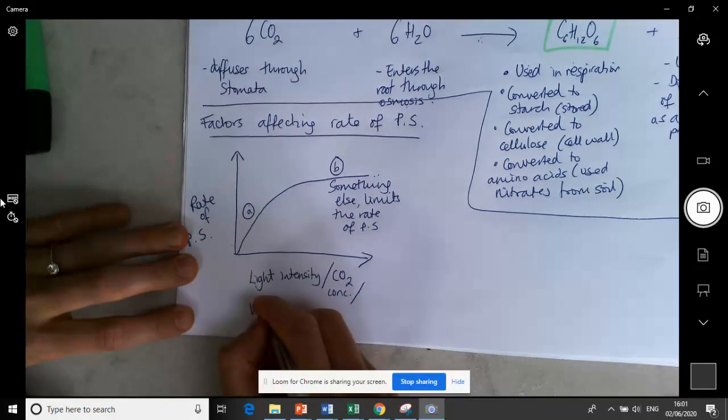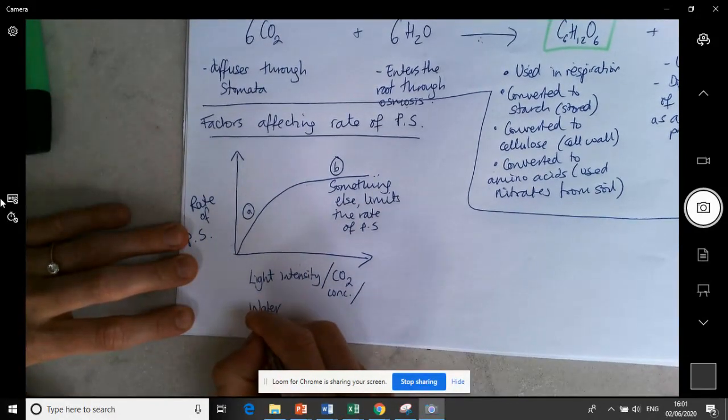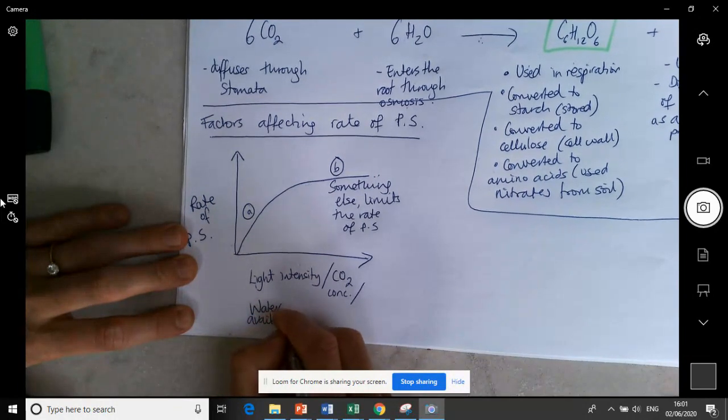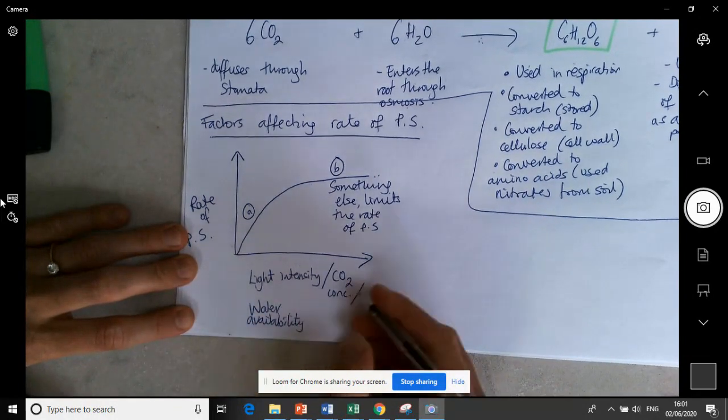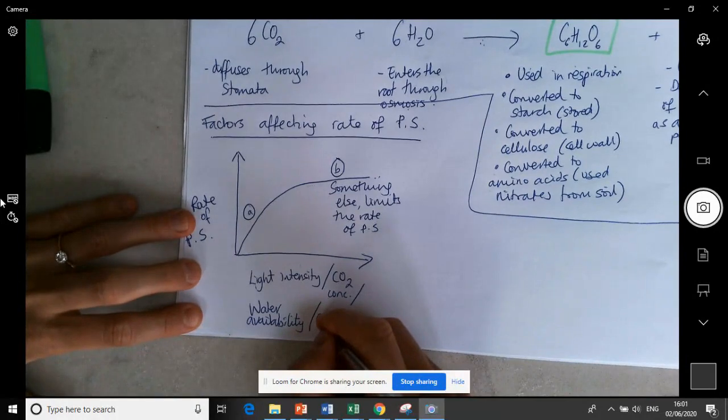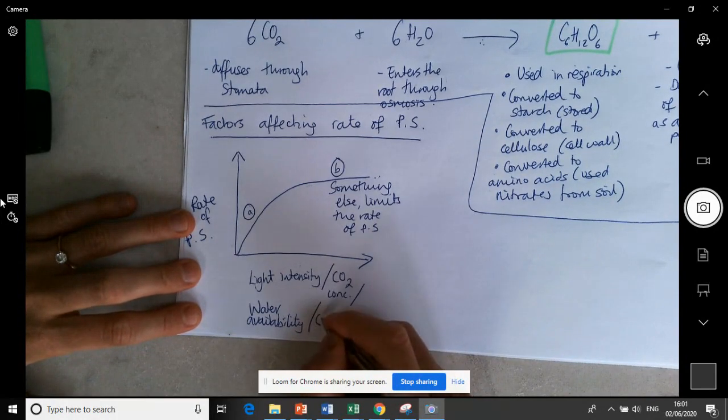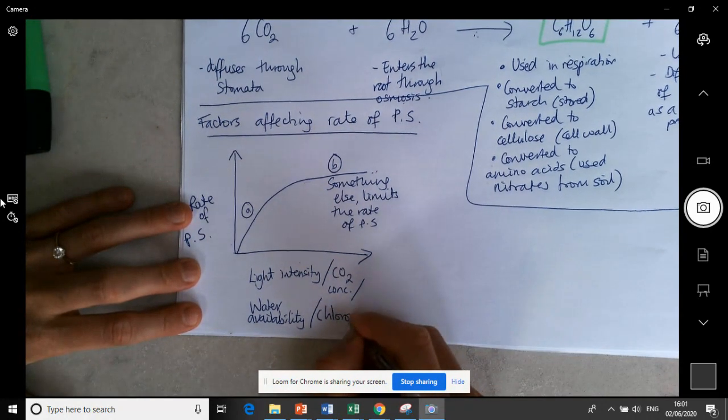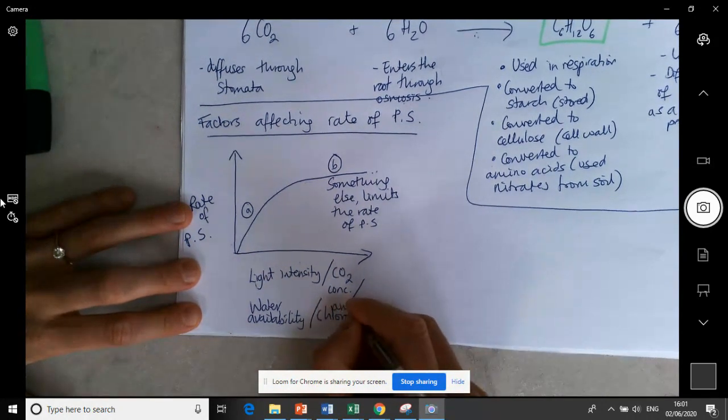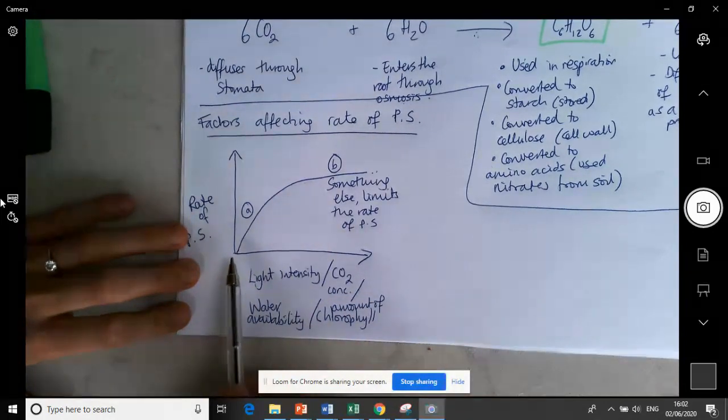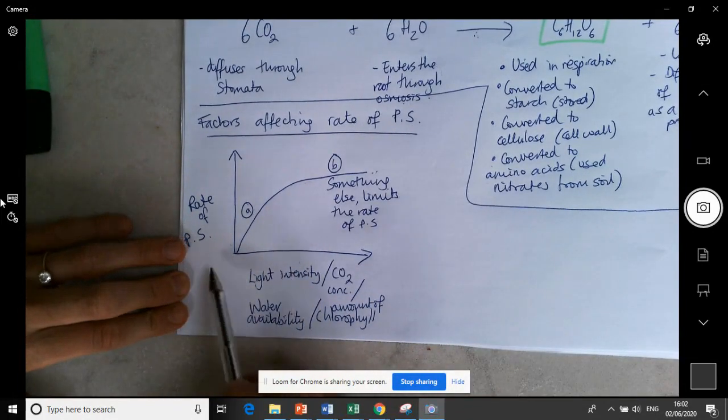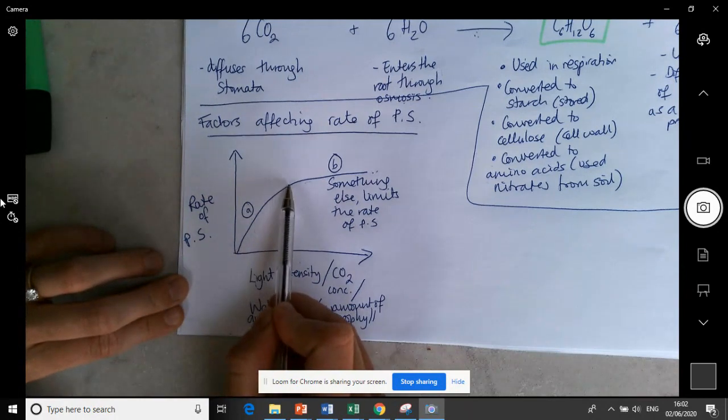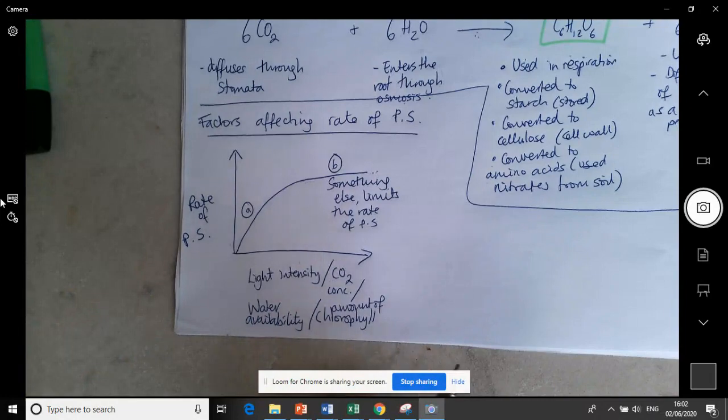We can also put the water availability. Again it's the same graph. And the final factor that we can have on the x-axis is the chlorophyll or the amount of chlorophyll. Again as we increase the amount of chlorophyll the rate of photosynthesis increases until something else becomes the limiting factor.